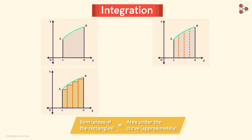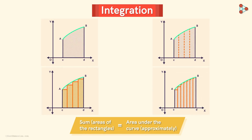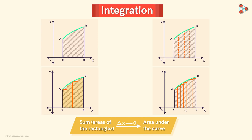As we increase the number of strips, our approximation gets better and better. And in the limit, the width of the strips tends to zero, and the approximate area approaches the area under the curve. This is the idea of integration we have seen so far.